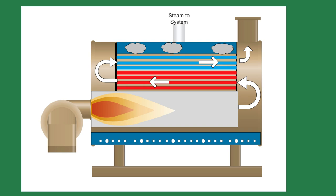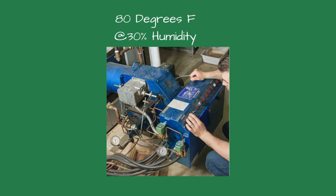Understanding how combustion air temperature and humidity affect boiler efficiency can help operators optimize performance, reduce fuel consumption, and lower emissions. Most boilers are tested using 80 degree Fahrenheit combustion air with a relative humidity of 30 percent — typical conditions found inside a boiler room.